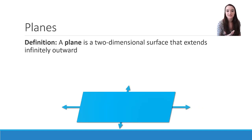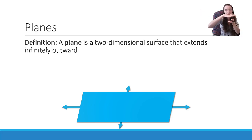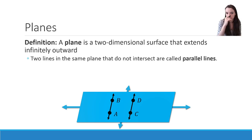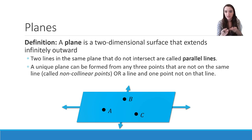Our next type of figure is a plane. While points are considered zero-dimensional and lines are one-dimensional, planes are a two-dimensional surface that extends infinitely in two dimensions. We can think of it like a wall or a piece of paper, but it extends in every direction — it's a flat surface going off infinitely. Two lines in the same plane that do not intersect are called parallel lines. A unique plane can be formed from any three non-collinear points, or from a line and a point — three points together.